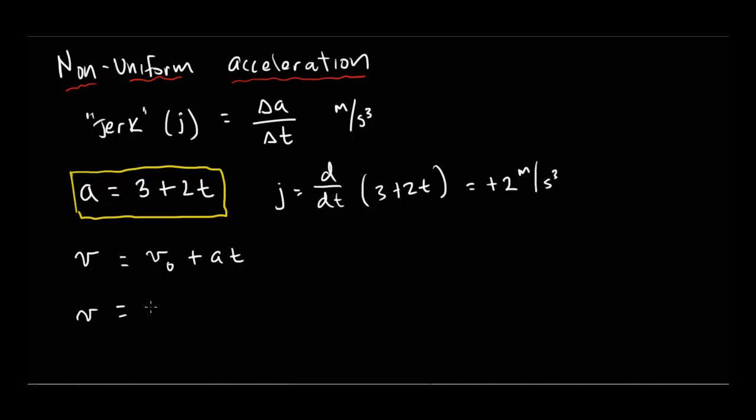Now it's going to equal v naught plus 3t plus 2t squared over two. What have I done here? I think I said the derivative, I took the integral, right?